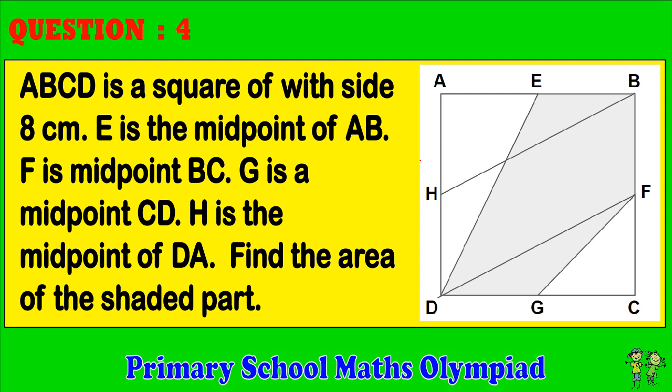Question 4: ABCD is a square with sides of 8 centimeters. E is the midpoint of AB. F is midpoint BC. G is the midpoint CD. H is the midpoint of DA. Find the area of the shaded part.